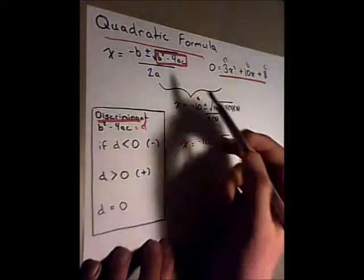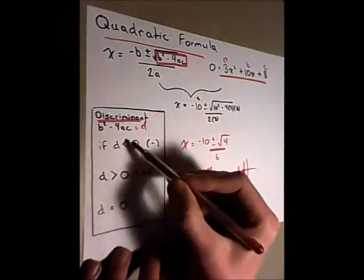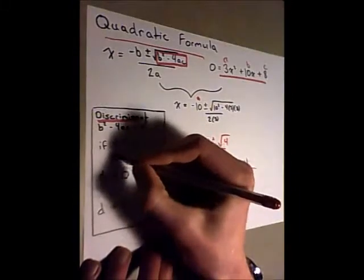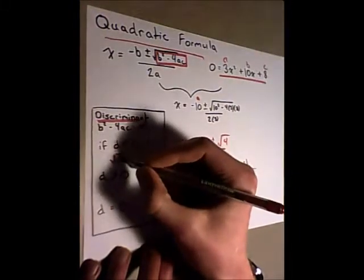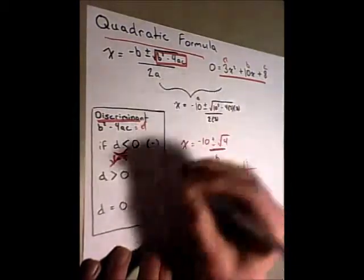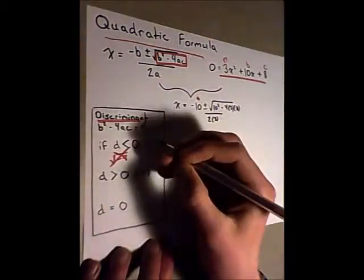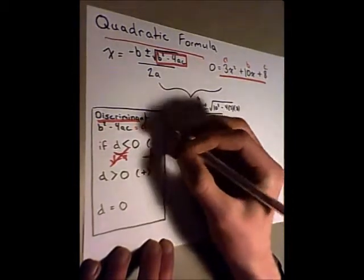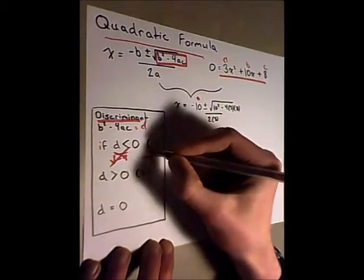And so, if you punch this in and you find that d is less than 0, or is a negative number, what happens if you try and find the square root of, let's say, negative 9? It doesn't work. That can't exist. So, therefore, we can figure out that there will be no x intercepts. There are no roots.